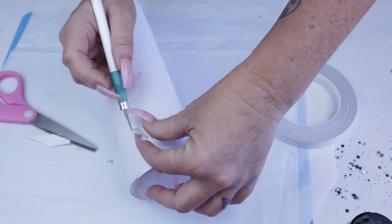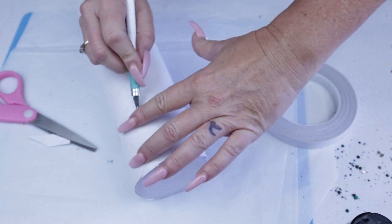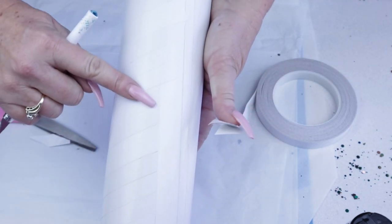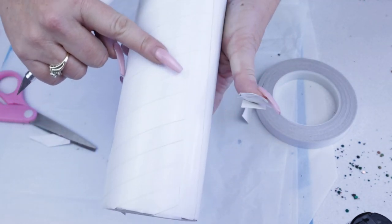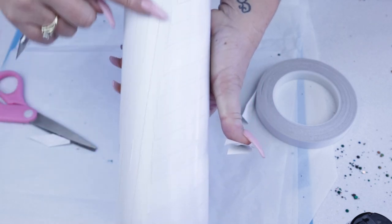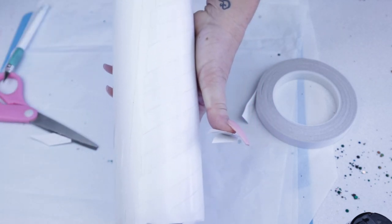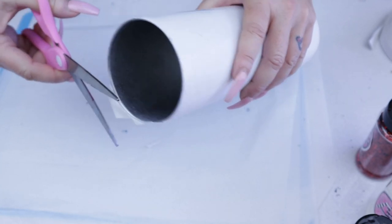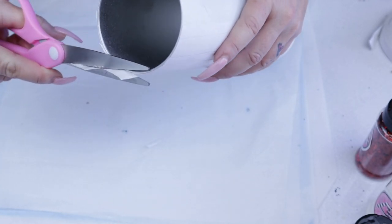Once you've cut your seams, go ahead and pull back the excess that remains and it pulls up really, really simply. Once you've cut the seams on both sides, go ahead and trim up the top and or the bottom wherever you have remaining excess of your double sided tape.